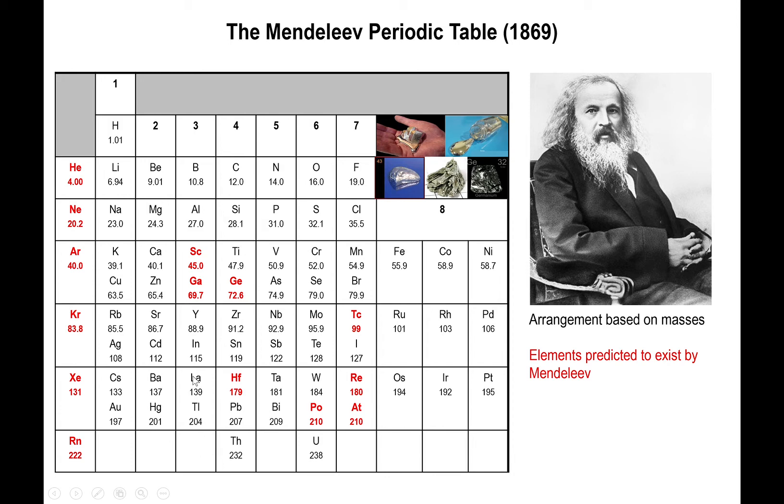With those predictions, Mendeleev was able to tell that an element would be of a certain color, that it would have a certain look, and that its melting point would be roughly within certain values. And to astonishing results, he was able to predict the properties almost to mind-blowing accuracy.